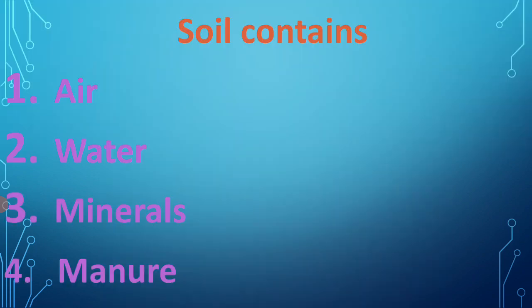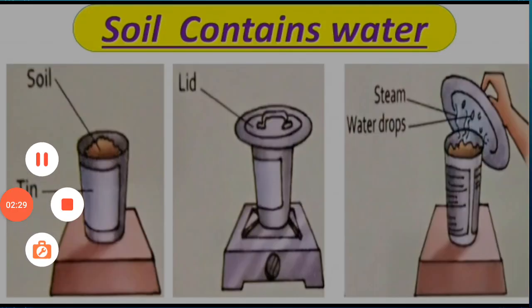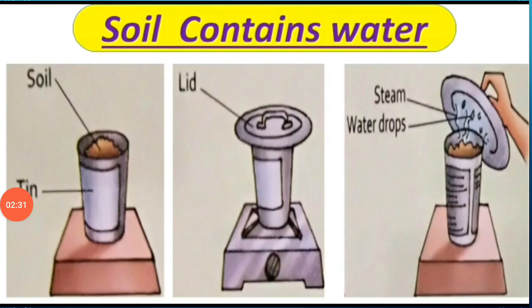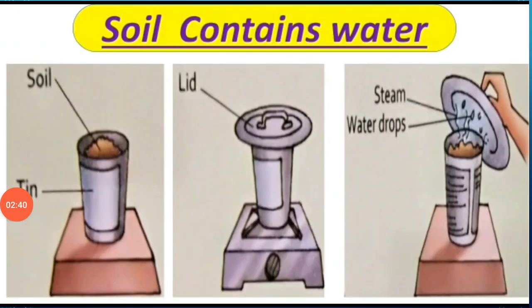Soil contains air and water. All types of soil contain water, and plants absorb this water from the soil. We can see this through an activity: take some soil in a container and cover it with a lid, then heat the container. Open the lid a little later and you will see tiny drops of water on the lid. This shows that soil has moisture in it.